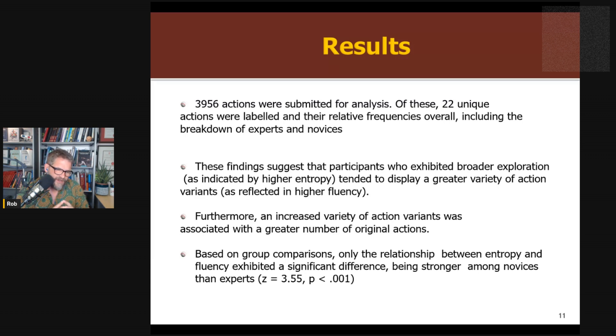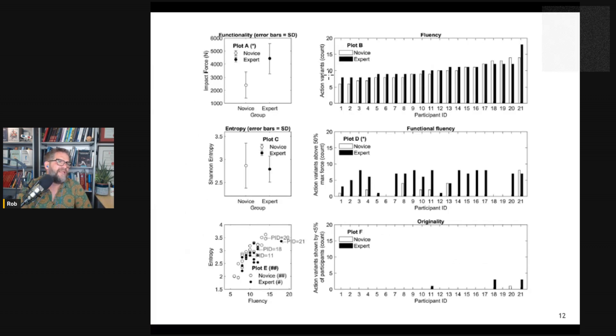Interestingly, this paper for the most part did not support their hypothesis as there was not really evidence. There were very few group differences. So the novice performers came up with as many original actions as the expert ones. The only real differences were looking at the relationship between entropy, exploration and fluency, and the functionality of the movements. The functionality of the movements was way higher for experts. So they hit with more force, not surprisingly, across the different action variants. So you get more fluency, more different ways they could achieve the high force functional fluency. There was not really any difference there, depending on the move.